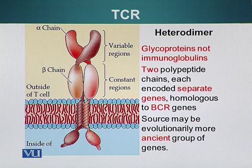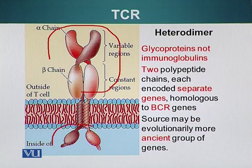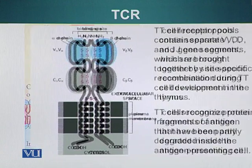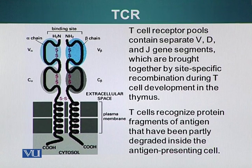Just like B cell receptors, there is an extracellular domain of the TCR which sticks outside the cell, and there is an intracellular domain of these receptors. There is also a stretch of hydrophobic amino acids which are embedded in the plasma membrane, forming the transmembrane domain. The T cell receptor is responsible for recognizing several different antigens being displayed with the help of MHC molecules.